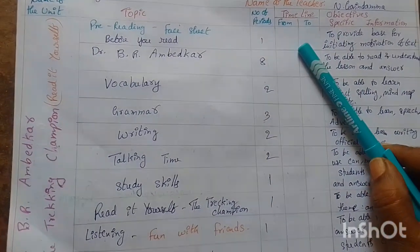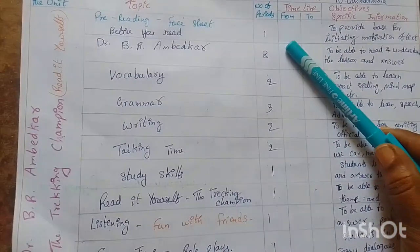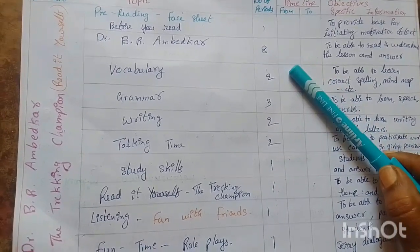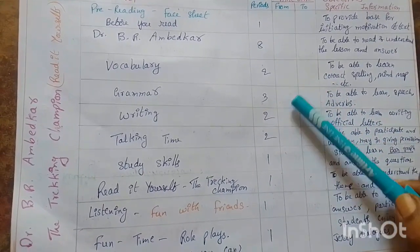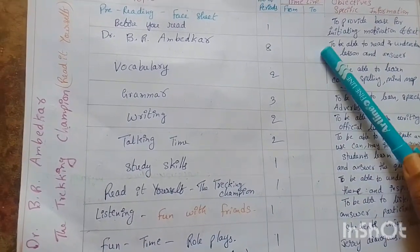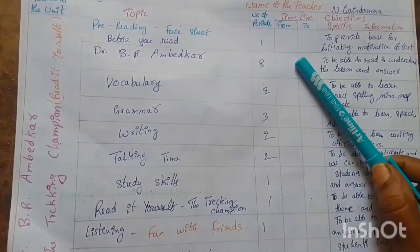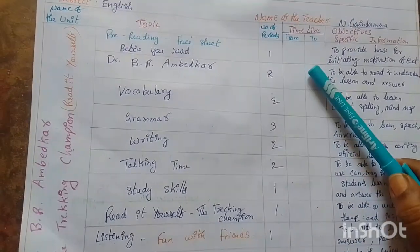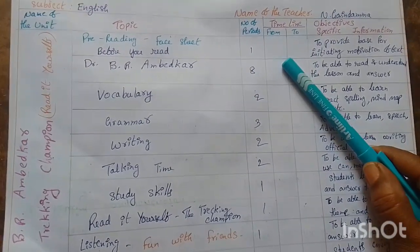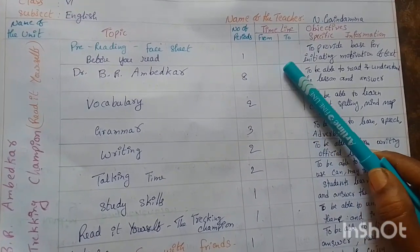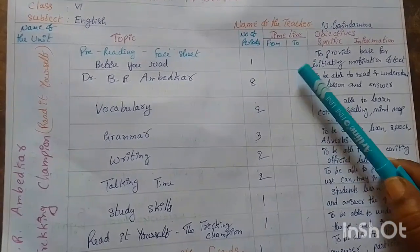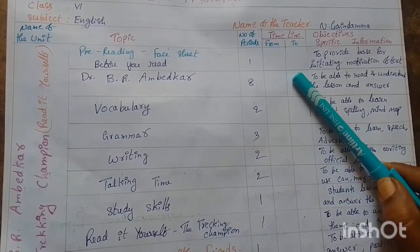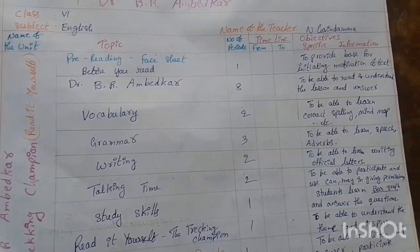We need the periods like 1, 8, 2, 3, 2, as you like. You can write the timeline from period 2, meaning the dates you can write according to your teaching time.